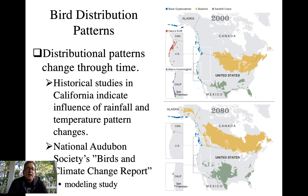As climate changes and weather patterns change in general, we're going to see distributional changes through time. This has already been demonstrated in classic studies in California showing how bird distributions have changed relative to changes in rainfall and temperature patterns — moving more northerly or moving up in elevation is a typical pattern that's been demonstrated.